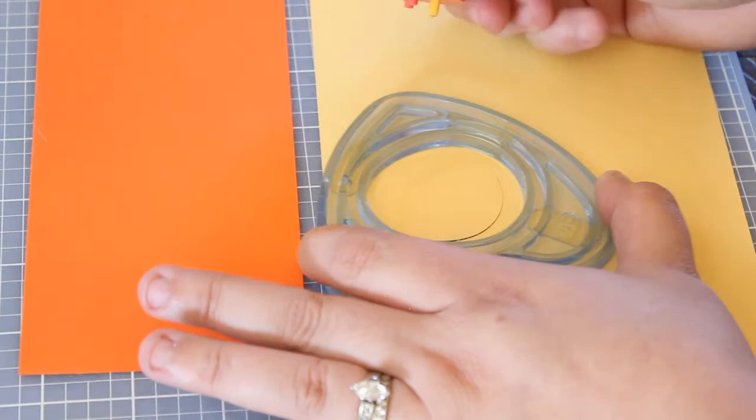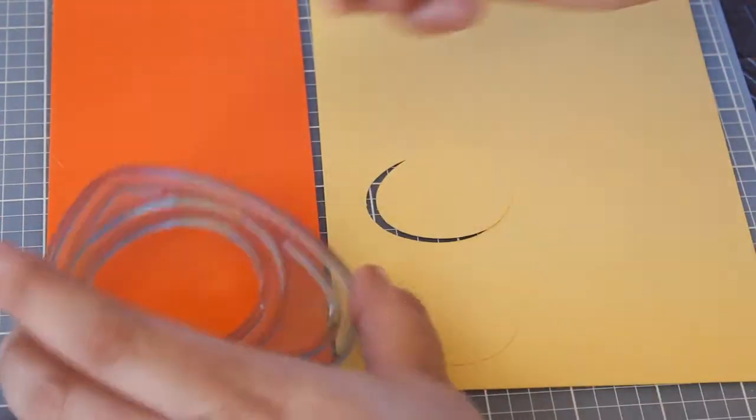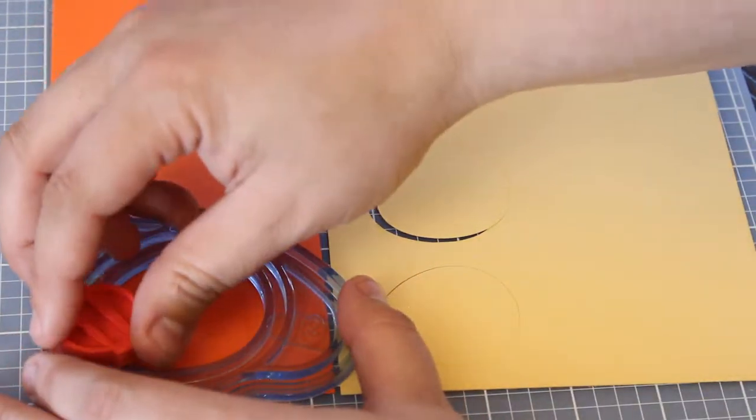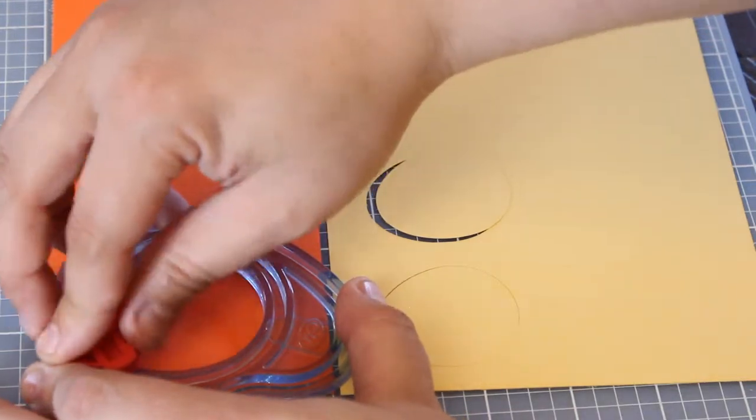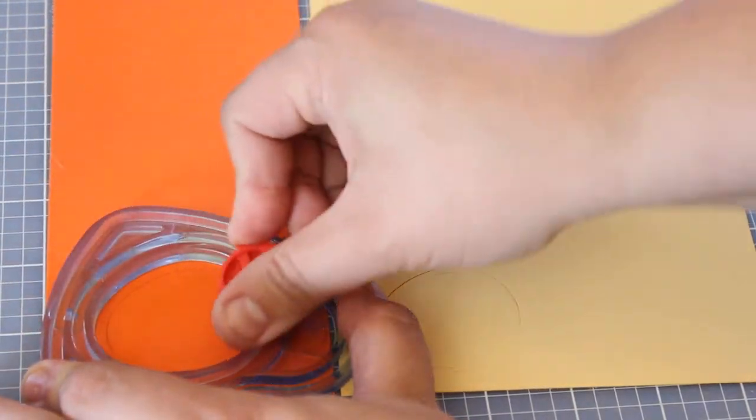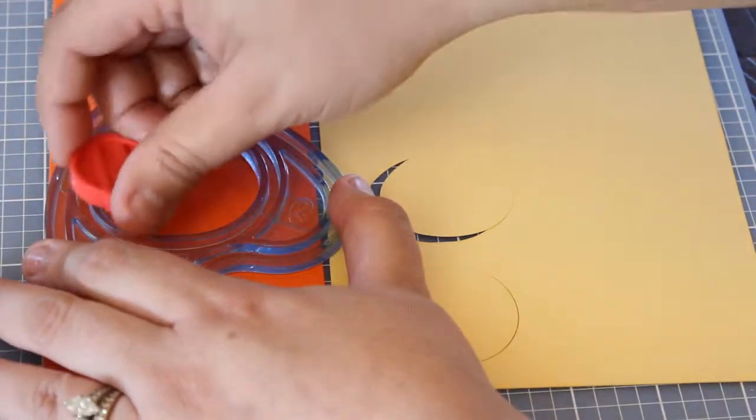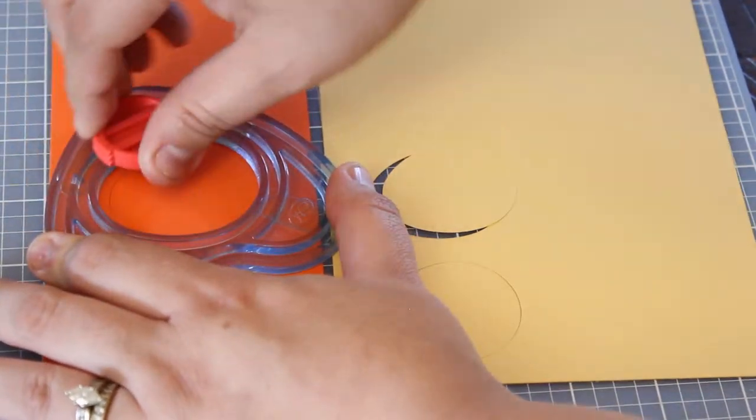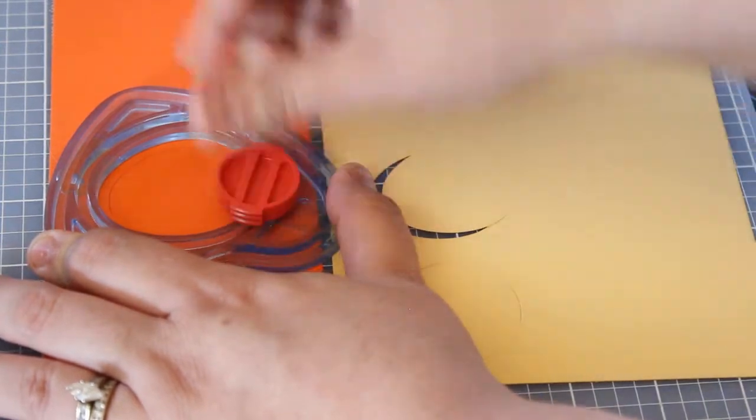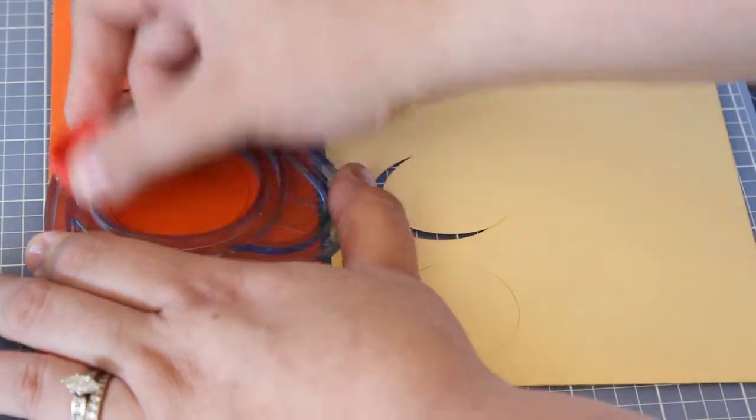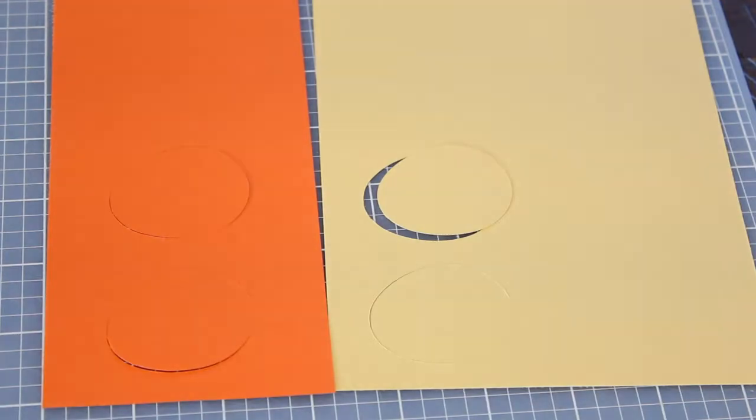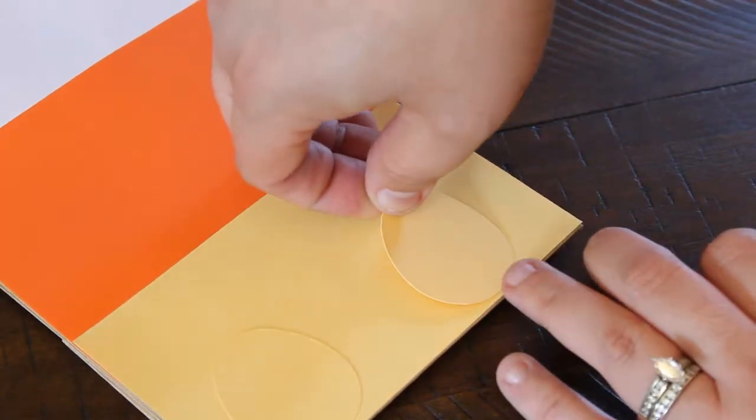Then I just went back in with the same cutting set from the last one and cut out the orange arms and the yellow legs. I went ahead and glued those into place.